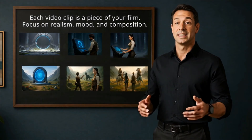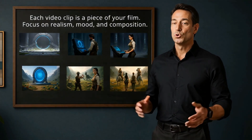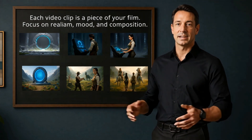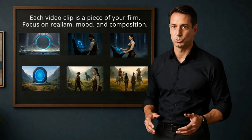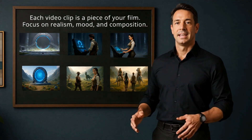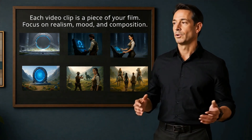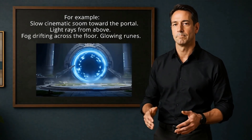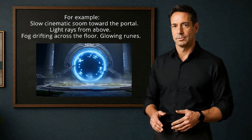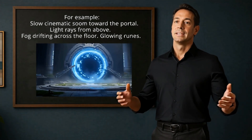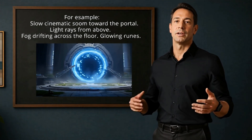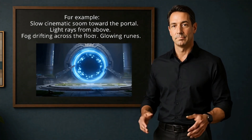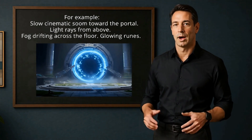Once your scenes are ready, it's time to turn them into video. Use tools like Pixverse or Kling — they generate high-quality cinematic video based on your image and motion prompt. Upload your scene and describe the action clearly. For example: 'slow cinematic zoom toward the portal, light rays from above, fog drifting across the floor, glowing runes.' Each generation should give you a video between 5 and 8 seconds, with realistic motion, depth, and atmosphere. Save each clip with a proper name — this will make editing easier later.